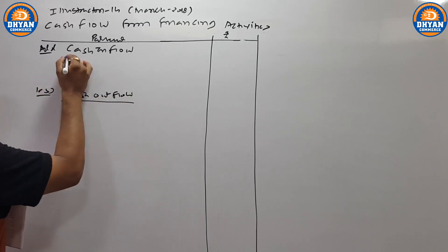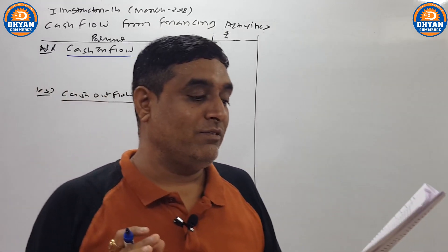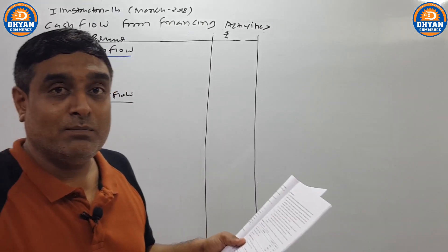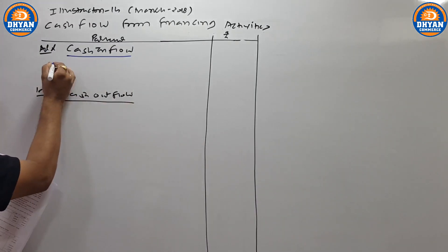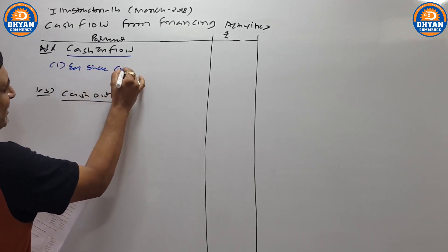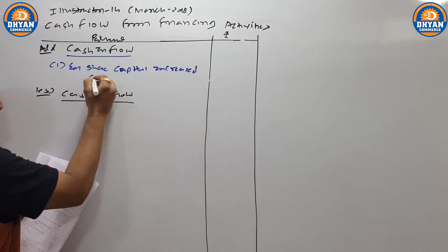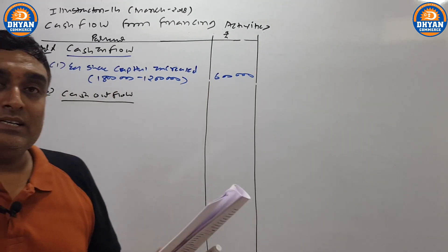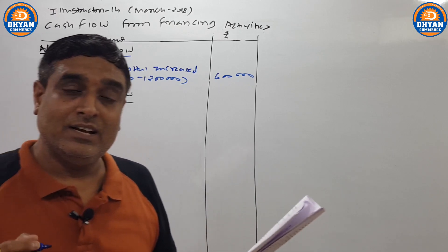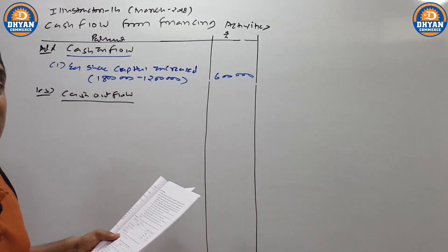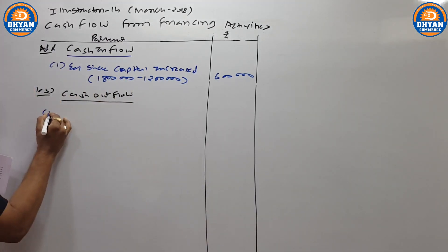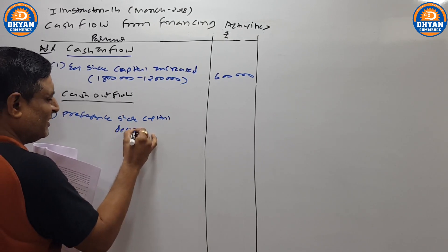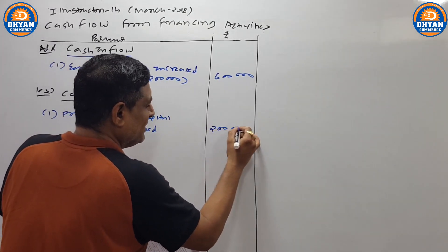Chalo, main reading start karta hoon. Table ke andar — pehla point hai equity capital. Last year capital 12,00,000 thi, current year ho gayi 18,00,000 — to difference 6,00,000 capital increase hui. Yaani company ne market mein shares issue ki honge aur 6,00,000 rupye receive ki honge — that is called cash inflow. Equity share capital increased — current year 18,00,000, last year 12,00,000 — 6,00,000 rupye receive hui. Aage jaate hain — preference share capital, last year 10,00,000 thi, current year ho gayi 8,00,000 — yaani preference share capital mein kami hui, yaani preference shares decrease hui, unke paise humne vaapis diye honge — cash goes out — financing activity — cash outflow. Preference share capital decreased — difference I think 2,00,000 rupye.